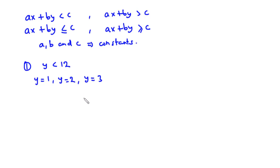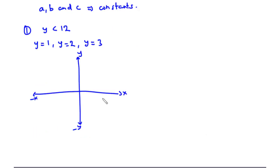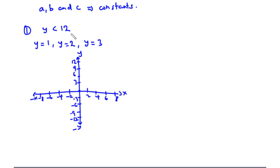We are going to represent this linear inequality on a graph to find the set of all possible solutions. We have the y-axis and the x-axis with negative x and negative y directions. Since we have the inequality y < 12, we are going to draw the line y = 12 on the graph. We locate 12 on the y-axis and draw a straight horizontal line through that point.